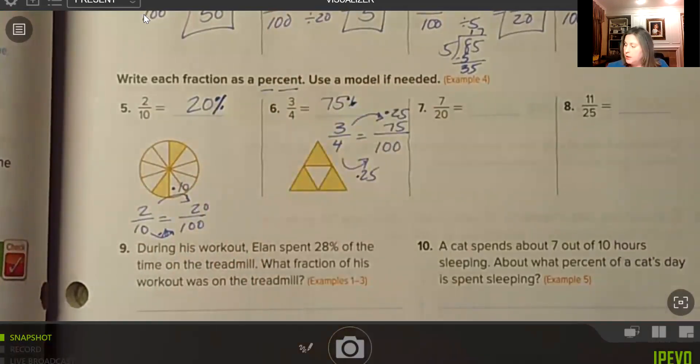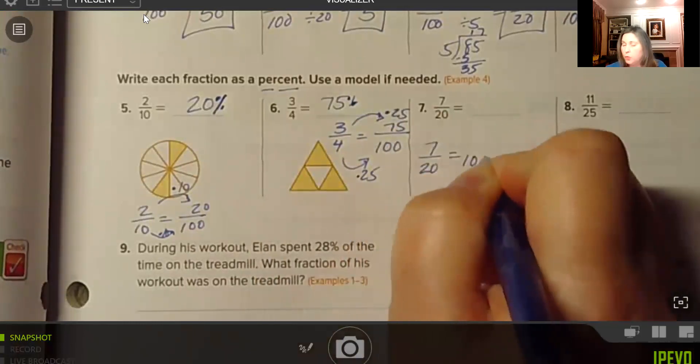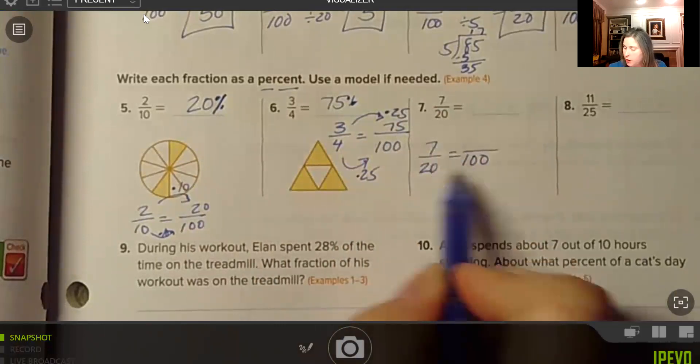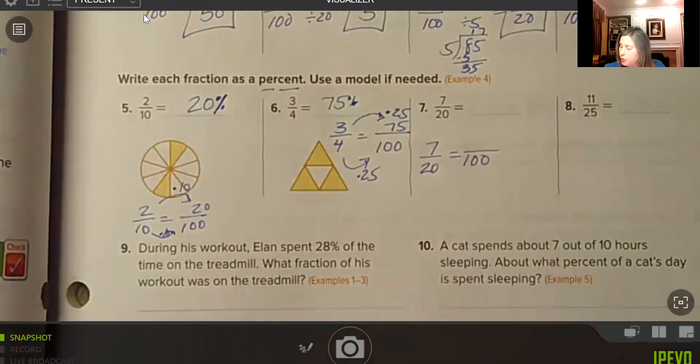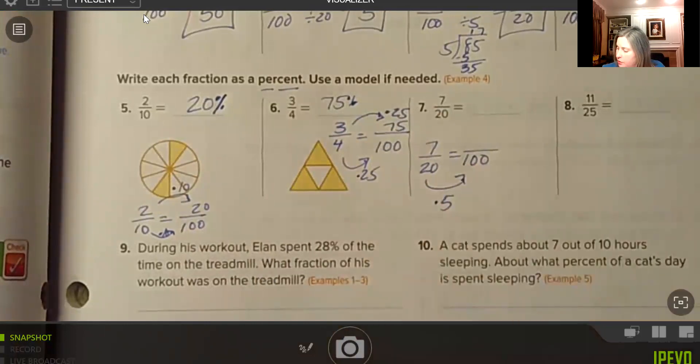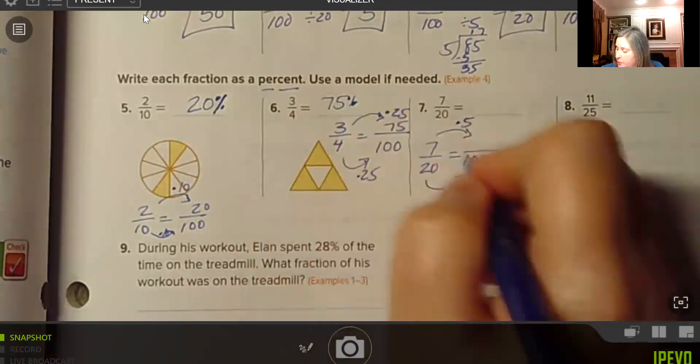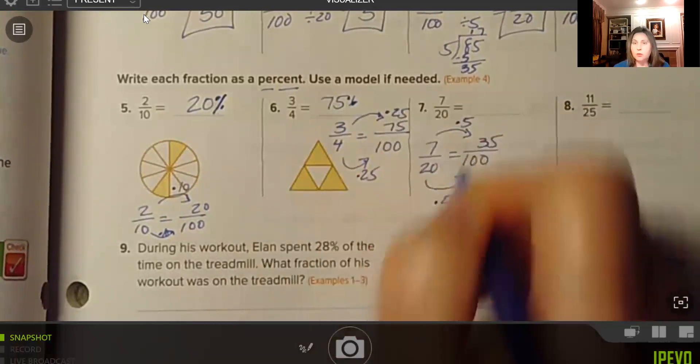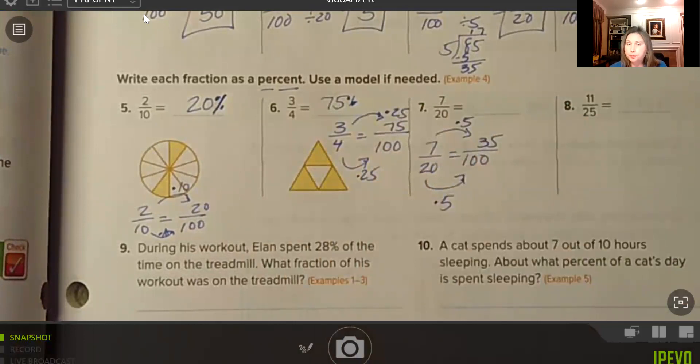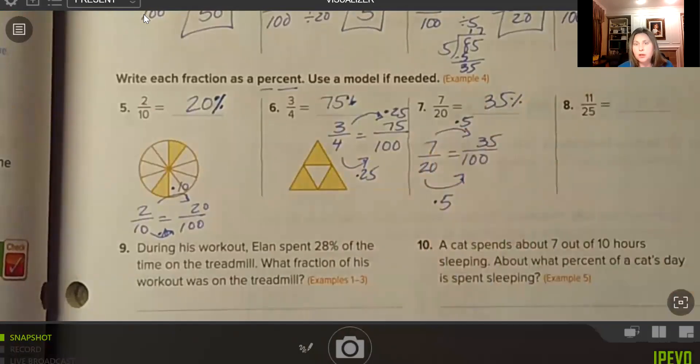Number 7, we have 7/20. So we want to scale that up to 100. So 7 is to 20 as x is to 100. So from 20 to 100, we multiply by 5. So to get from 7 to our numerator, we also multiply by 5. So 7 times 5 is 35. 7/20 is equal to 35/100, and that is 35%.